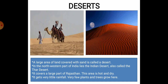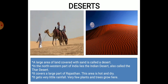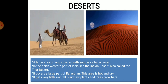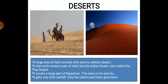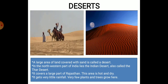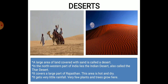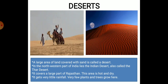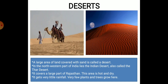Deserts: A large area of land covered with sand is called a desert. In the northwestern part of India lies the Indian desert, also called the Thar Desert. It covers a large part of Rajasthan. This area is hot and dry. It gets very little rainfall, and very few plants and trees grow here.